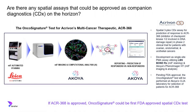Are there any spatial assays that could be approved as companion diagnostics on the horizon? One example is the Onco Signature Test for Acrovon's multi-cancer therapeutic ACR368. This is a three-plex assay that predicts response to the drug and is being assessed in a phase 2 clinical trial for patients with ovarian, endometrial, and urothelial cancers. Interestingly, this assay utilizes Leica's BondRx instrument along with Akoya's imaging and analysis platform. If this drug gets approved in the next couple of years, the Onco Signature Test could be the first FDA-approved companion diagnostic using spatial technology.